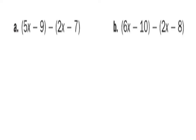Try A and B. Micah's going to do A for us. Can you explain what you're doing and why? There are negatives — there's a minus, so I have to change it to positives. And 5x plus negative 2x is 3x, and negative 9 plus 7 is negative 2.